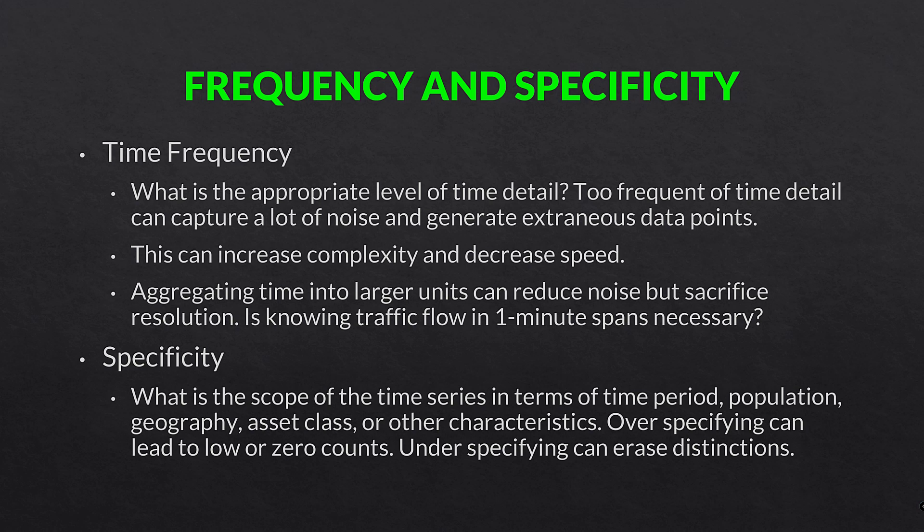Overspecifying can lead to low or zero counts, and underspecifying can erase distinctions, so it's always a balance. In a count example, if the event is rare over time, you could have zero counts if measuring in too small a time window, so you might need to widen it. But on the flip side, too wide a time window, geography, or population can erase distinctions. It's always a balance between over-specifying and under-specifying.